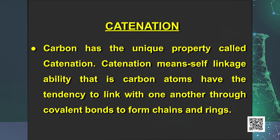The reason is carbon has the unique property called catenation. Catenation means self-linkage ability — that is, carbon atoms have the tendency to link with one another through covalent bonds to form chains and rings, to form straight chain compounds as well as branched chain carbon compounds. In addition, carbon atoms get linked by single, double, or triple bonds. Carbon forms covalent bonds with other elements also, like hydrogen, oxygen, sulfur, phosphorus, and halogens. Since carbon forms a huge number of compounds, a separate branch of chemistry was developed known as organic chemistry, to study carbon compounds only.